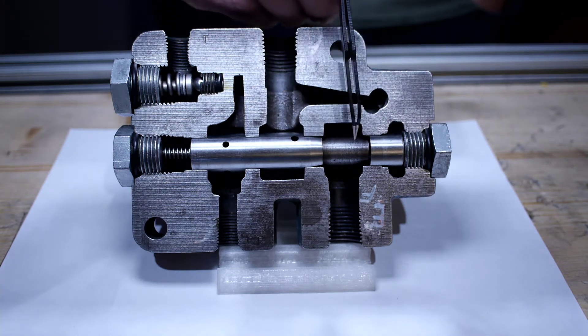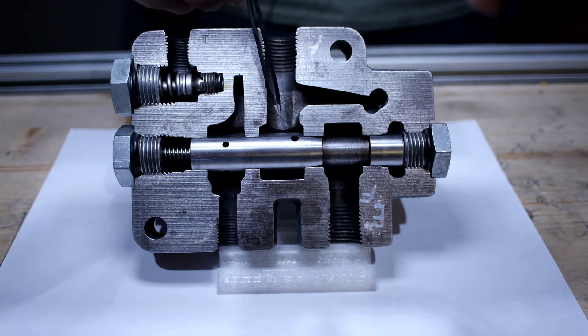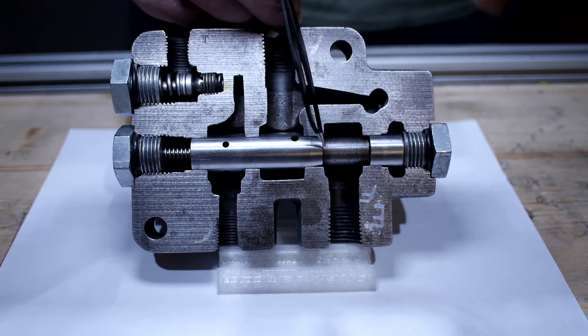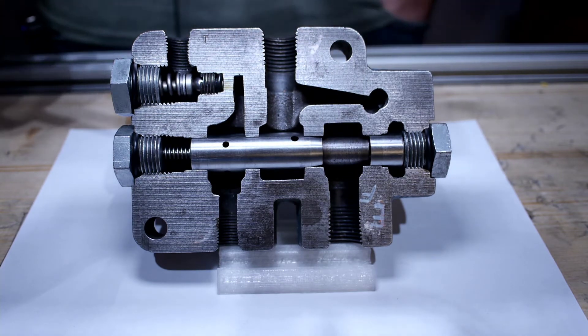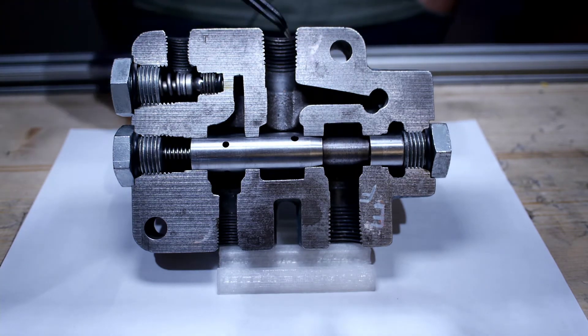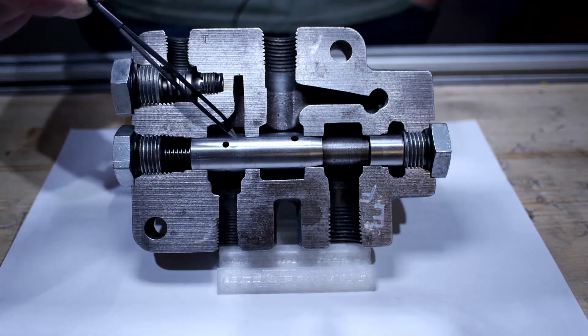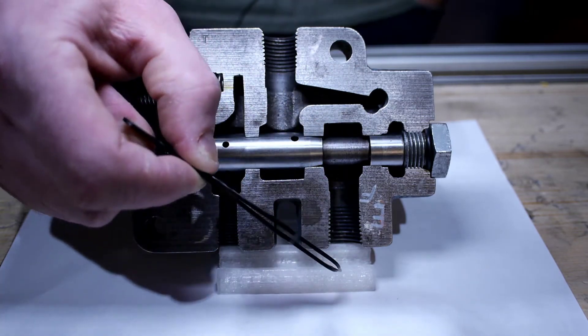When the spool moves over, whatever excess flow has been building up in pressure will then be allowed to go past this chamfered land right here and go out the excess flow port. So this is a priority flow control that has the flow coming in, priority flow goes to the control port. As the pressure builds up, it moves the spool over and opens up and sends the oil to the excess flow port.